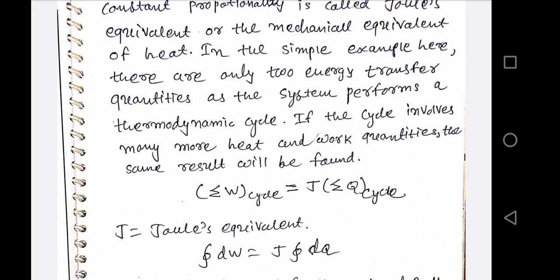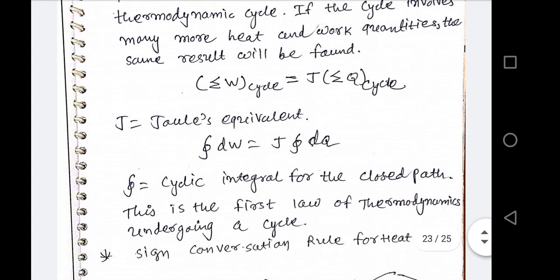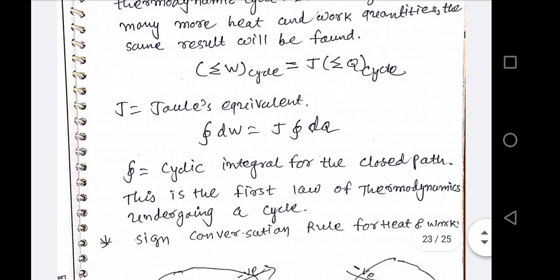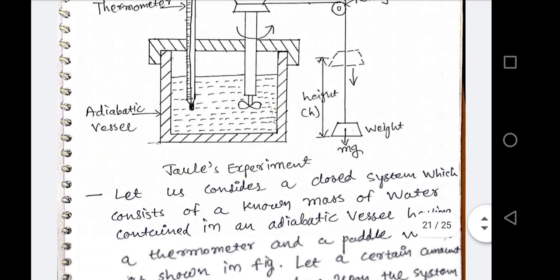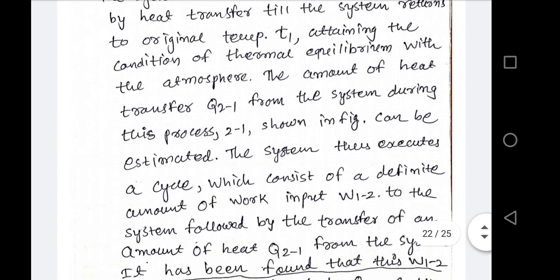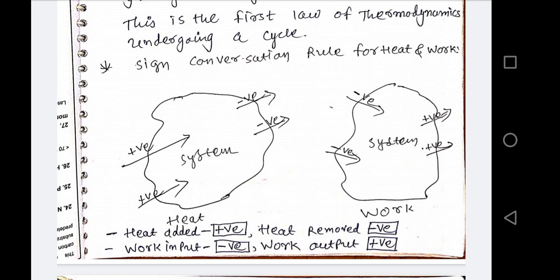J is known as Joule's constant because it was derived from Joule's experiment. In differential form, the cyclic integral of work equals the cyclic integral of heat multiplied by Joule's constant: ∮δW = J × ∮δQ. This is the first law of thermodynamics for a system undergoing a cycle, also known as Joule's constant experiment.